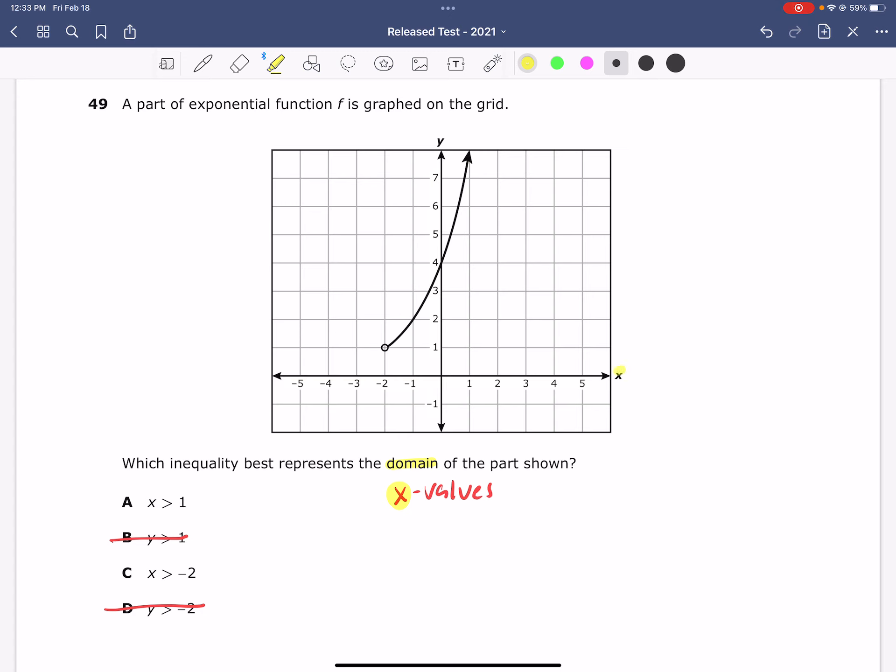We need to remember that domain is x. And so if we look on the x-axis, the x-axis is here and here, we need to figure out where this graph is starting on that axis. What we see is that the graph starts here, and that would be at negative 2.